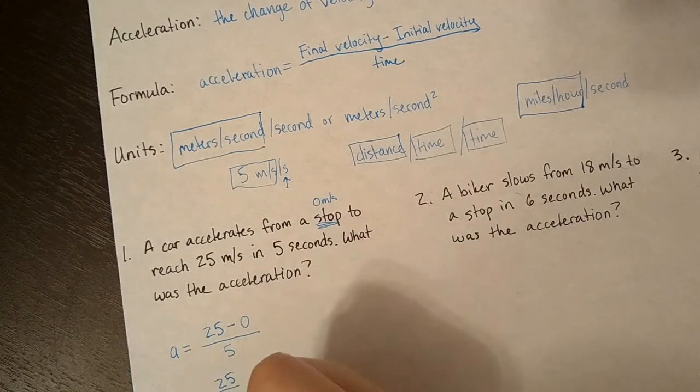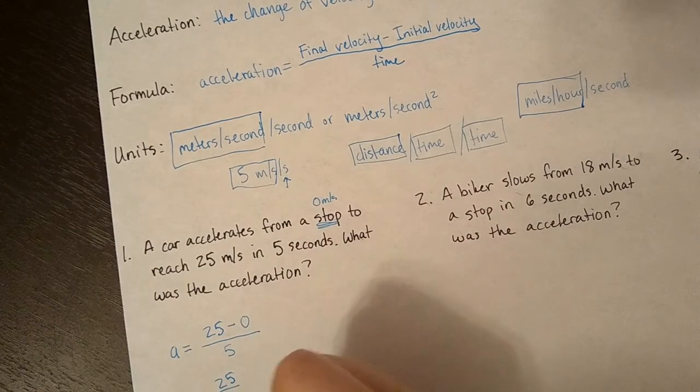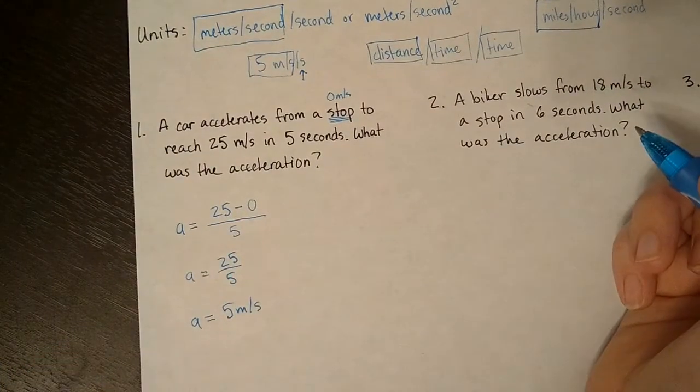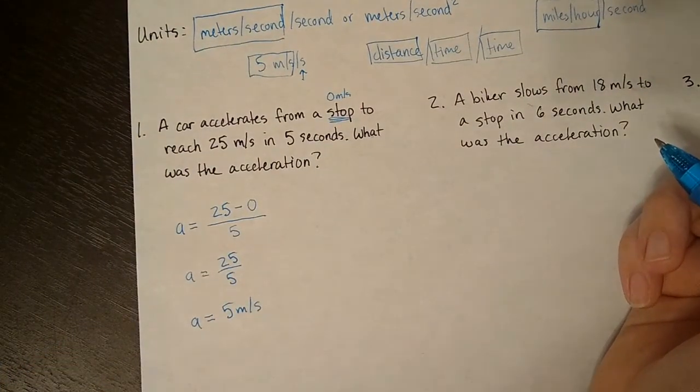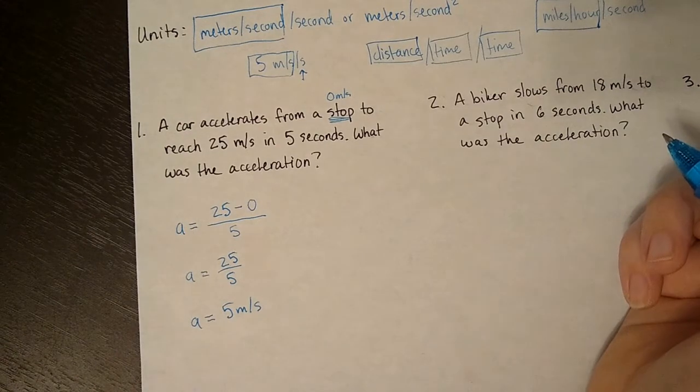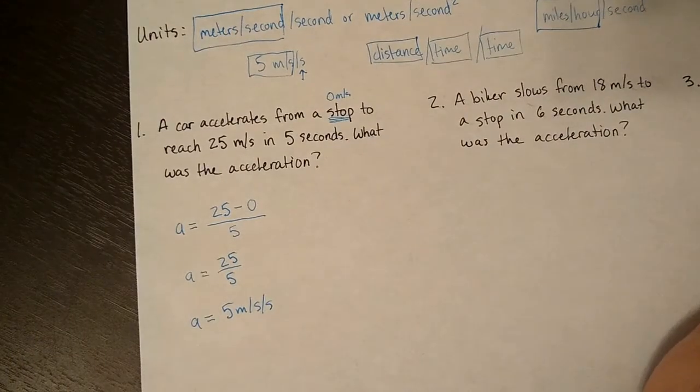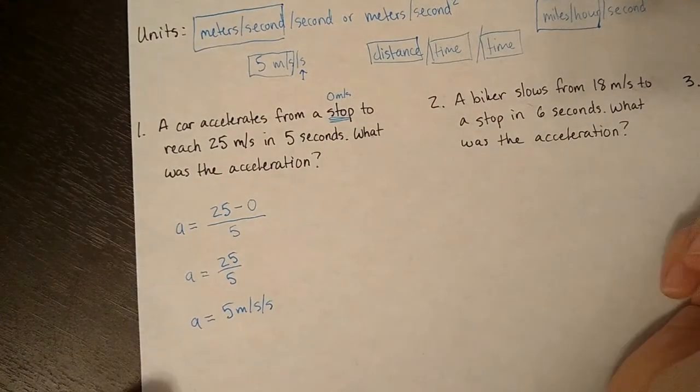Our acceleration is five meters per second per second. So that means that every second, our velocity increased by five meters per second. Help if I put the correct units. There we go.